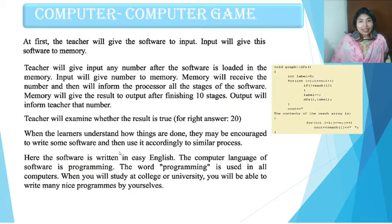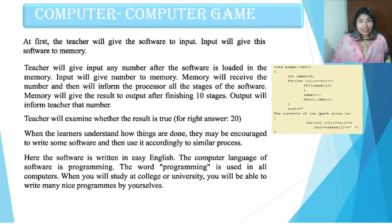Let's see how they will play. I will give input any number after the software is loaded in memory. Input will give the number to memory. Memory will receive the number and then inform the processor of all the stages of the software. Memory will give the result to output after finishing ten stages. Output will inform me about that number, and I will examine whether the result is true or not. The right answer will be ten or twenty.